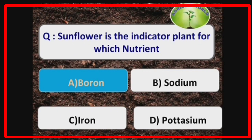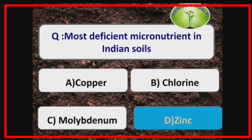Sunflower is the indicator plant for boron, maize is the indicator plant for iron, and sugar beet is the indicator plant for sodium. The most deficient micronutrient in Indian soils is zinc, whereas the most deficient macronutrient is nitrogen.